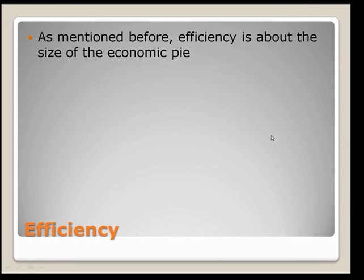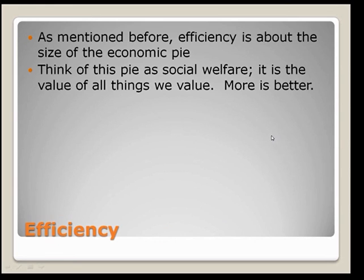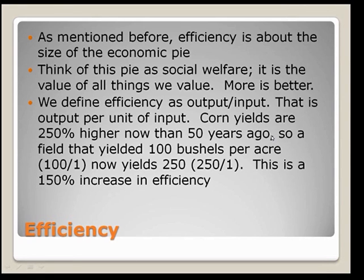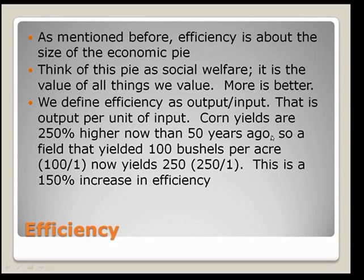Let's talk about efficiency now. As I mentioned before, efficiency is about the size of the economic pie — think of this pie as social welfare, the value of all things we value. By definition, if there are things you value, more pie is always better. We define efficiency simply as output over input — output per unit of input. For example, corn yields are 250% higher now than they were 50 years ago. A field that 50 years ago yielded 100 bushels per acre would now yield 250 bushels per acre. Thus efficiency went up by 150%.